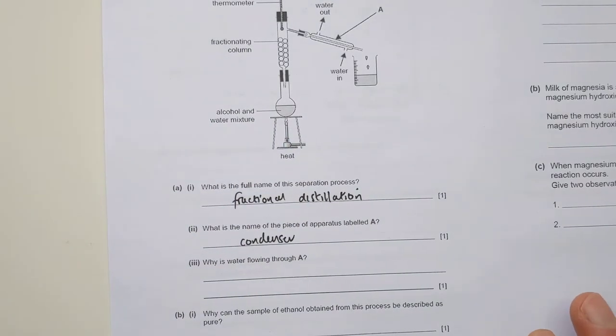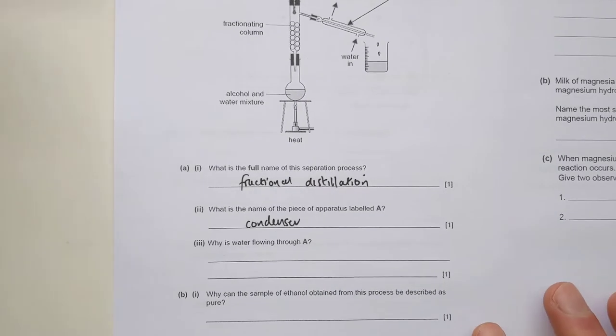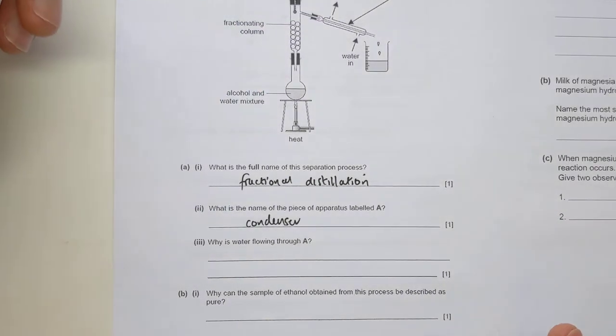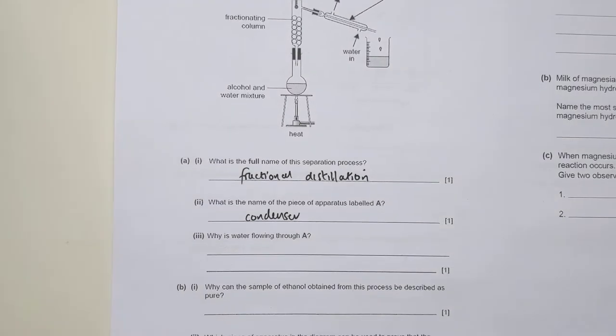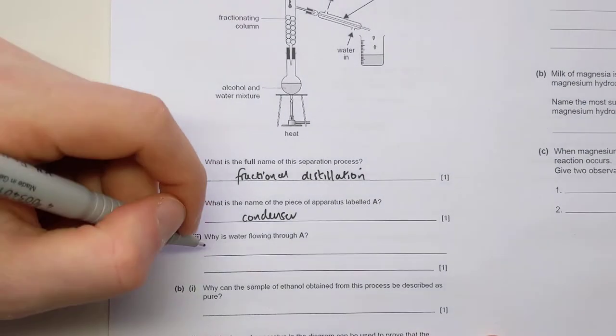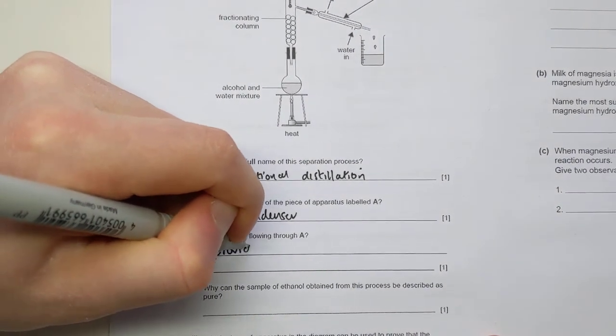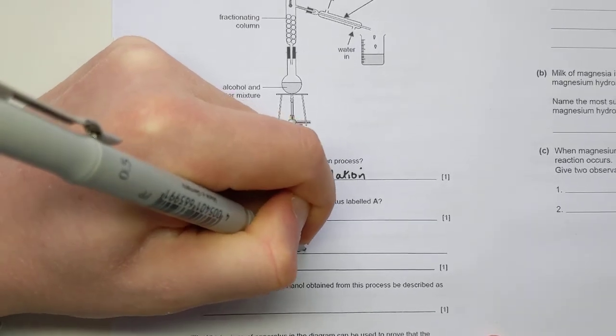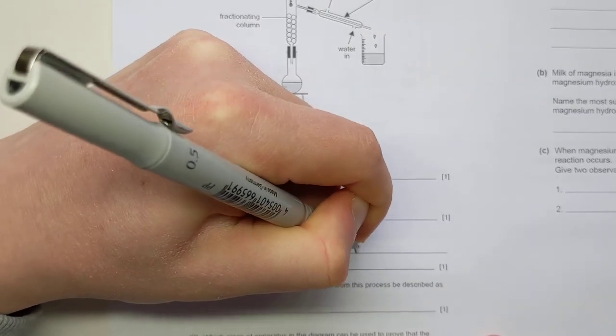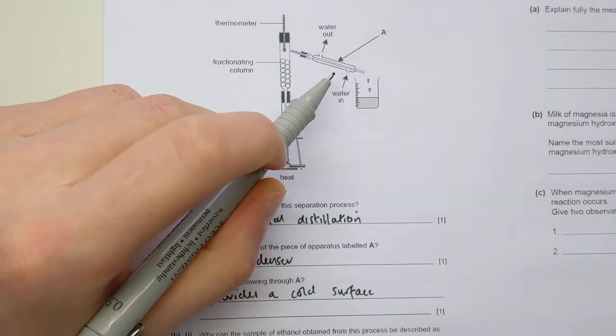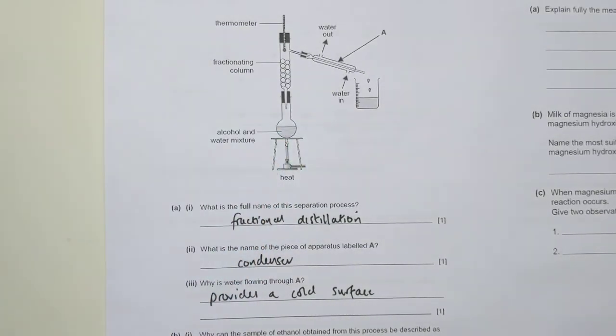Why is water flowing through A? So the water is just providing a cold surface to allow any gas being put through the apparatus to turn back into a liquid. So when you cool something down, it condenses back into a liquid. So it provides a cold surface. Remember, it's not actually running through the condenser, just around the outside of it.